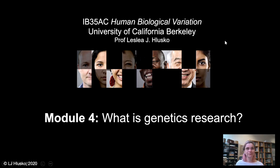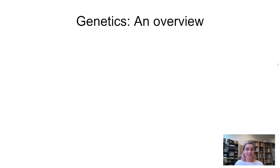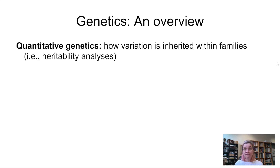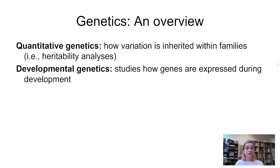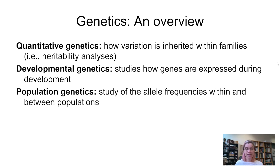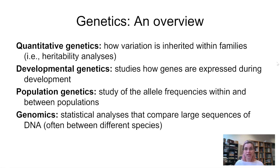Genetics falls into four major categories. One: quantitative genetics — how variation is inherited within families; we would estimate heritability. Two: developmental genetics — studies of how genes are expressed during development. Three: population genetics — the study of allele frequencies within and between populations. And four: genomics — statistical analyses that compare large sequences of DNA, often between different species, but not always.